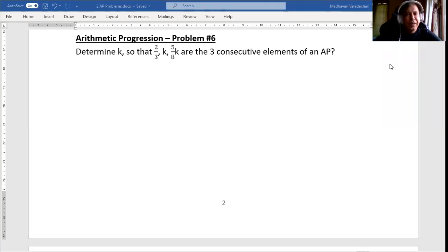Problem number 6 in arithmetic progression. The question is: determine k, the value of k, so that 2/3, k, and 5/8 times k are the three consecutive elements of an AP.